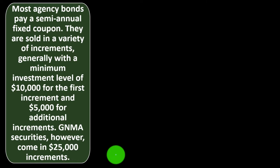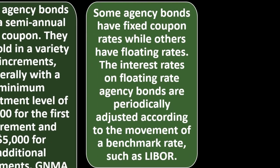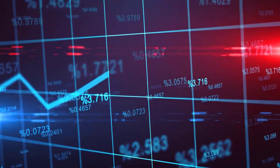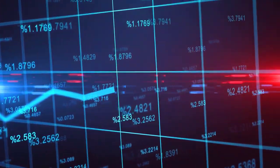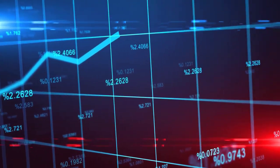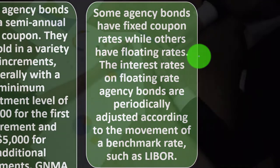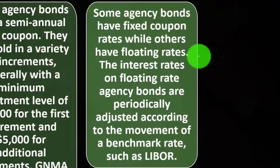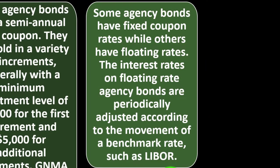Agency bonds are sold in a variety of increments, generally with a minimum investment of $10,000 for the first increment and $5,000 for additional increments. GNMA securities, however, come in $25,000 increments. Some agency bonds have fixed coupon rates while others have floating rates, where the rate actually changes with certain conditions it is linked to.